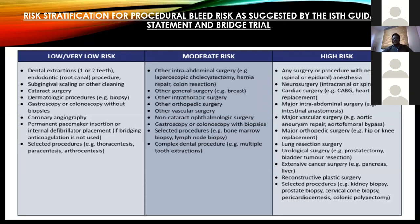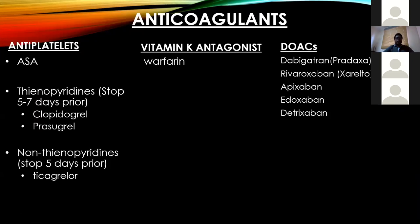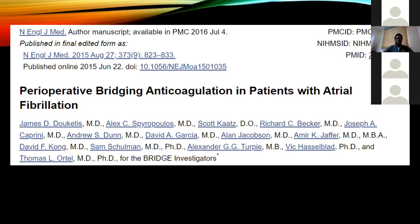The other way of stratifying bleeding risk is by the type of procedure. This can be stratified into high bleeding risk, low to moderate bleeding risk, and minimal bleeding risk — based on studies already documented. High risk procedures include neuroaxial anesthesia, neurosurgery, and major intrabdominal surgeries. Moderate risk includes most laparoscopic procedures. Low risk includes dental extractions of one or two teeth. Anticoagulants are largely grouped into three categories: antiplatelet agents, vitamin K antagonists, and direct oral anticoagulants.